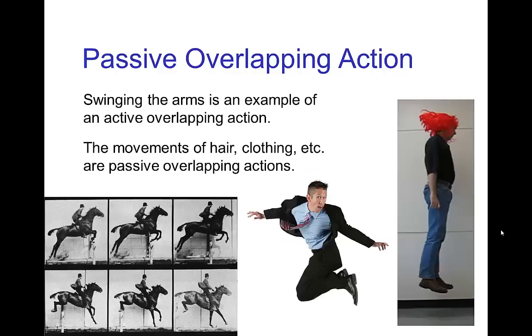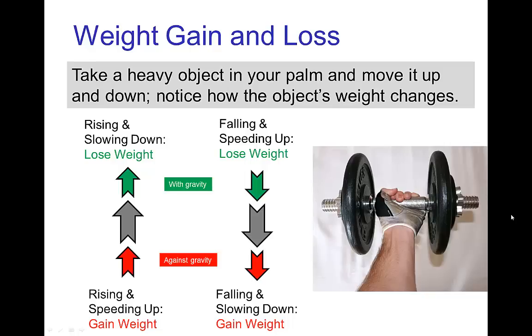Now, there's also a passive overlapping action, so any kind of motion of the hair, the clothing, with this horse, the mane of the horse, the tail, the clothing of the rider, and so forth. So these passive overlapping actions in a jump are affected by the weight gain and loss in the motion. So just to review how this works, if you have an object and it's either accelerating up or accelerating down, there's going to be a variation in the weight.